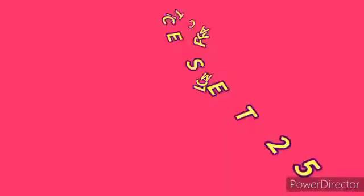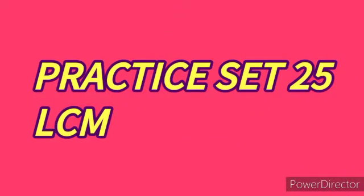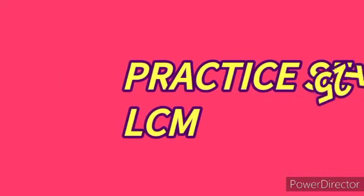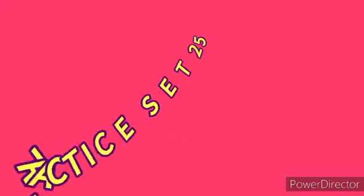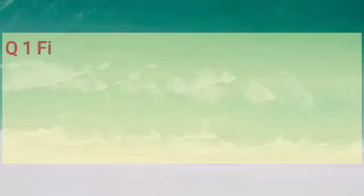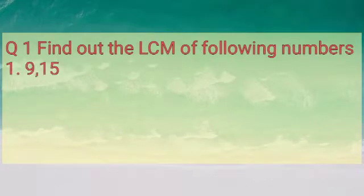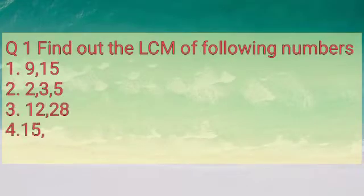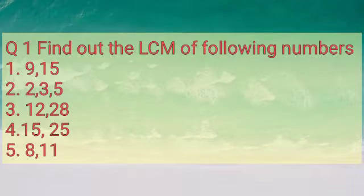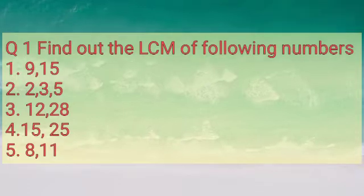Here, we completed our practice set number 24. Let us start practice set number 25. Here, the problems are based on lowest common multiple. Children, to find the LCM of the given numbers is to write down the multiples of each of the given numbers and to find the lowest of their common multiples. The LCM of two or more numbers cannot be greater than their product.